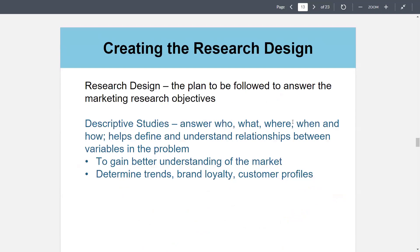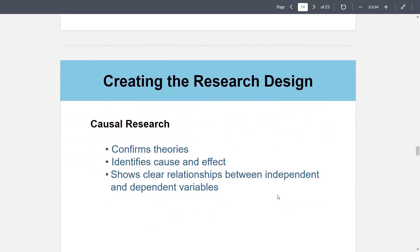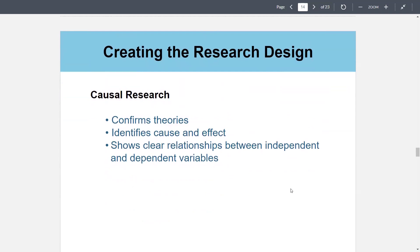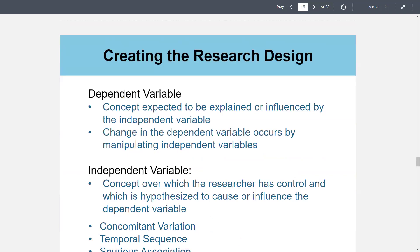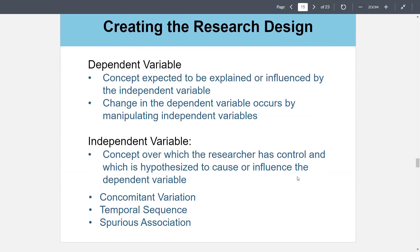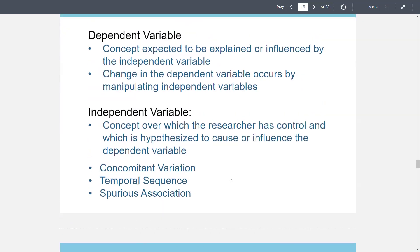Causal research confirms hypotheses and identifies cause and effect — shows clear relationships between independent and dependent variables. The dependent variable is expected to be explained or influenced by the independent variable. The independent variable is the concept the researcher controls, hypothesized to cause or influence the dependent variable. Concomitant variation, temporal sequence, and spurious association are things that pop up — sometimes the independent and dependent variables may seem related, but it turns out to be a coincidence. Choosing the right research method: survey research involves interviewer interaction with respondents to obtain facts, opinions, and attitudes; observation research is descriptive research that monitors respondent actions; experiments measure causality by changing one or more variables and observing the effect on another variable.